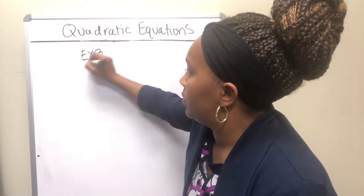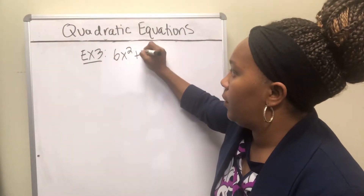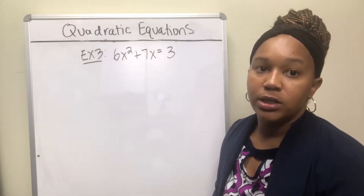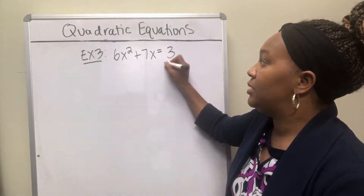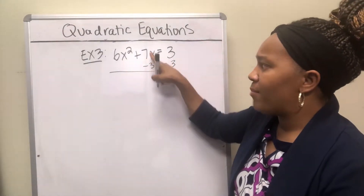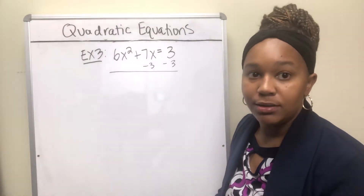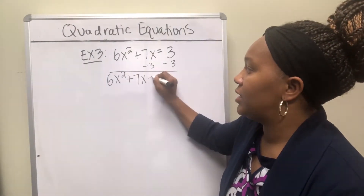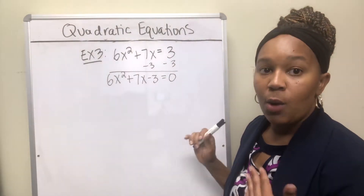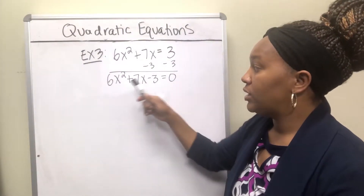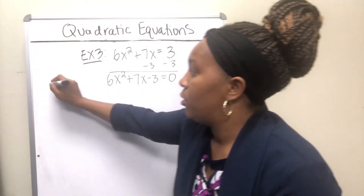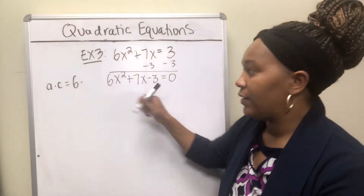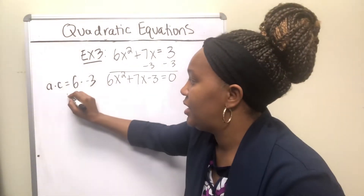Example 3: we want to solve 6x squared plus 7x equals 3. As mentioned, whenever you're solving a quadratic equation you want to get zero on one side. So I move the 3 over — I can't combine it with 7x because one has an x and the other doesn't — giving us 6x squared plus 7x minus 3 equals zero. Since there's a coefficient not equal to 1 in front, I need to multiply a times c: 6 times negative 3 gives negative 18.